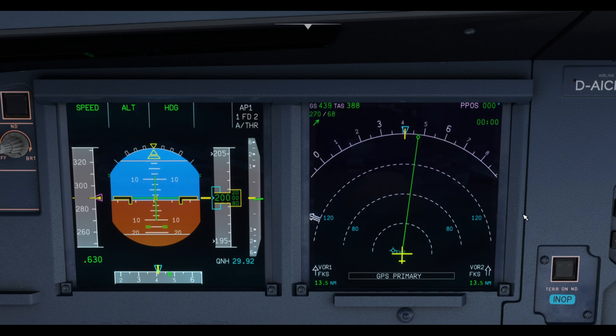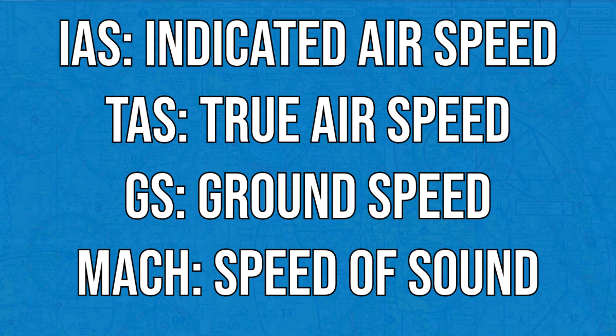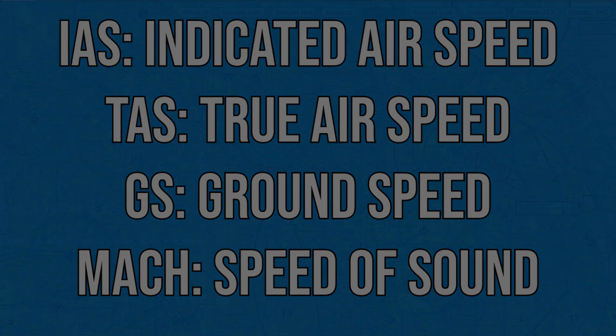To summarize: today we learned the IAS (indicated airspeed), TAS (true airspeed), GS (ground speed), and the Mach number, which is the percentage of the speed of sound. There is one more speed, which is the calibrated airspeed, but it is just the indicated airspeed corrected for minimal errors caused by the position of the pitot tube in the airplane — it is more or less the indicated airspeed and is almost never used by pilots. Thank you very much for watching, and I'll see you all next time. Bye bye!